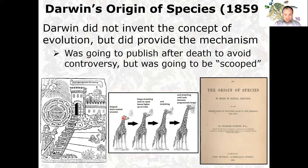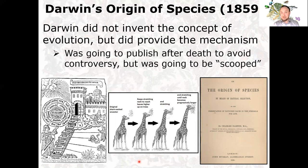Darwin's original Origin of Species was published in 1859. He knew it would be controversial — the church dogma was strongly ingrained, and the idea that the creator wouldn't make animals perfect from the beginning, that organisms would evolve and go extinct, was considered blasphemous. He planned to publish after his death, but another researcher was working on the same topic, so Darwin rushed to publish before being scooped.